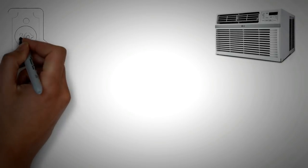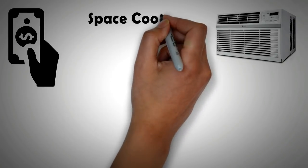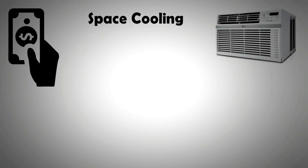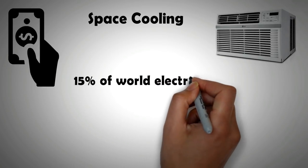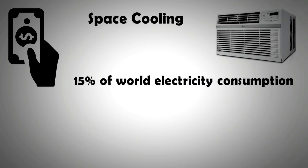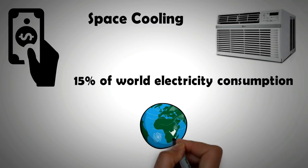Space cooling accounts for the largest electricity consumption in the Middle East. In Australia, space cooling accounts for 20% of the consumed electricity. Recent research has revealed that air conditioning systems today account for almost 15% of the total energy consumption of the world.